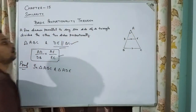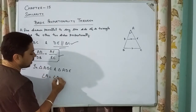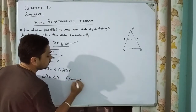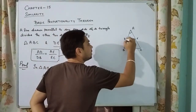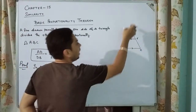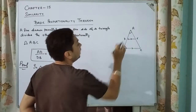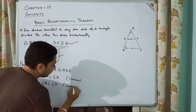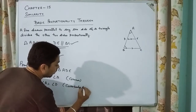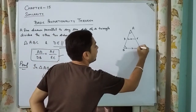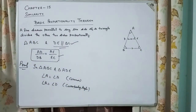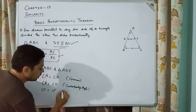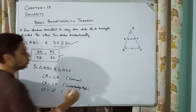In terms of similarity, we have a common angle A in both triangles, so angle A equals angle A which is common. Since DE is parallel to BC and the transversal cuts at points B and D, angle B equals angle D which is a corresponding angle. Similarly, angle C equals angle E, again a corresponding angle.